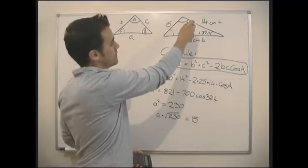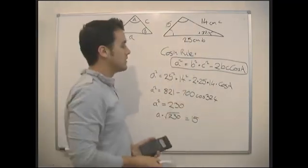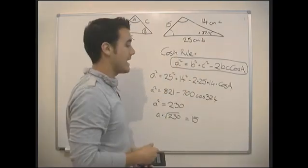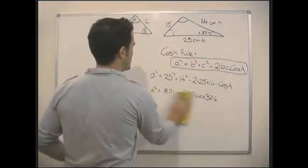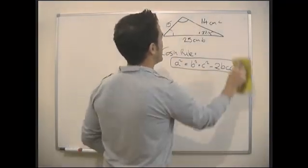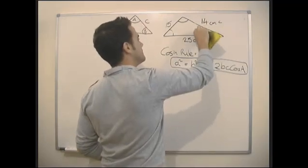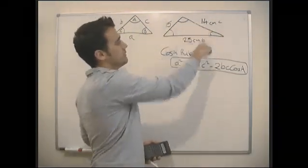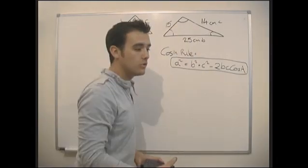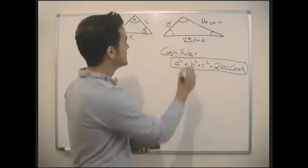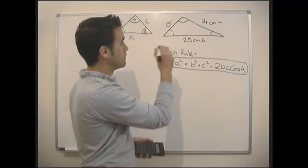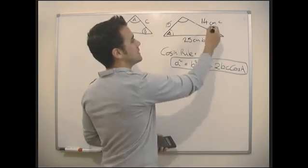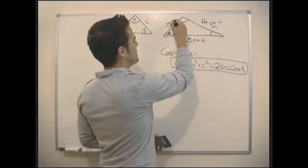We can find the remaining angles using the sine rule, then find the last angle by subtracting from 180. The other time we'd use the cosine rule is when we have all three sides and need to find an angle — when we don't have that opposite angle. So if we just have all the sides and need to find an angle, say we want to find this angle here, we'll call it A.